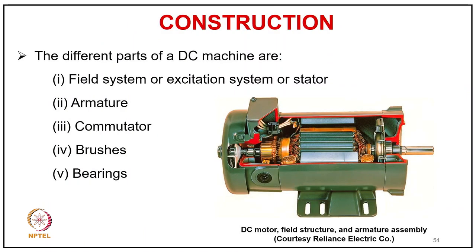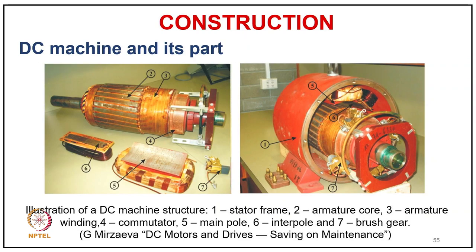Coming to the construction of the DC machine: the different parts include the field system or excitation system on the stator, the armature on the rotor, the commutator on the side of the armature, brushes riding on the commutator, and bearings. Visible parts in open form include field poles with wound coils, the stator frame, armature core, armature winding, commutator (part 4), main pole (part 5), inter-pole (part 6), and brush (part 7).